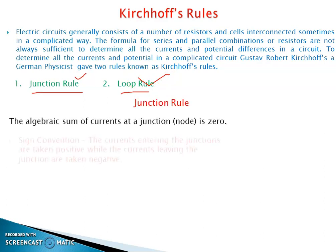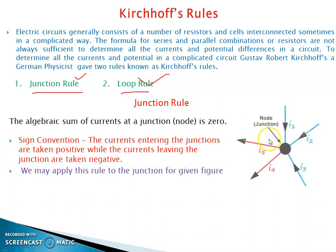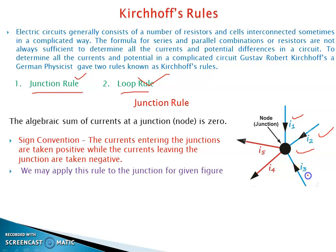For the junction rule: a junction is a point where more than two wires are connected. In the example circuit, five wires meet at a junction. Currents I1, I2, and I3 are coming into the junction, while I4 and I5 are leaving. Sign conventions are important: current entering the junction is taken as positive, and current leaving the junction is taken as negative.